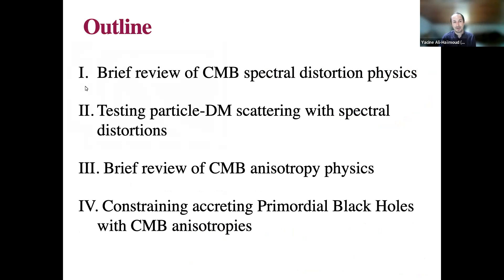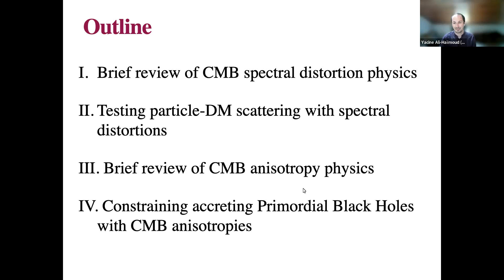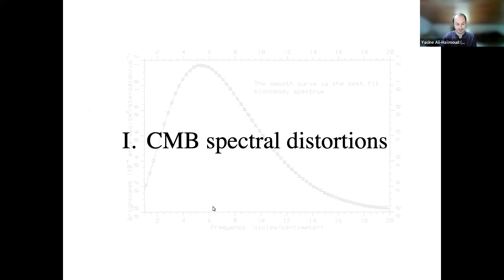The outline of this talk: I will start with a very brief review of the physics underlying the spectral distortions of the CMB. Then I will give an example of how this can be an observable to test properties of dark matter, specifically whether dark matter could scatter elastically with standard model particles. In the third part, I will cover aspects of CMB anisotropies, specifically the importance of recombination, and then how we can use CMB anisotropies to constrain primordial black holes as a dark matter candidate.